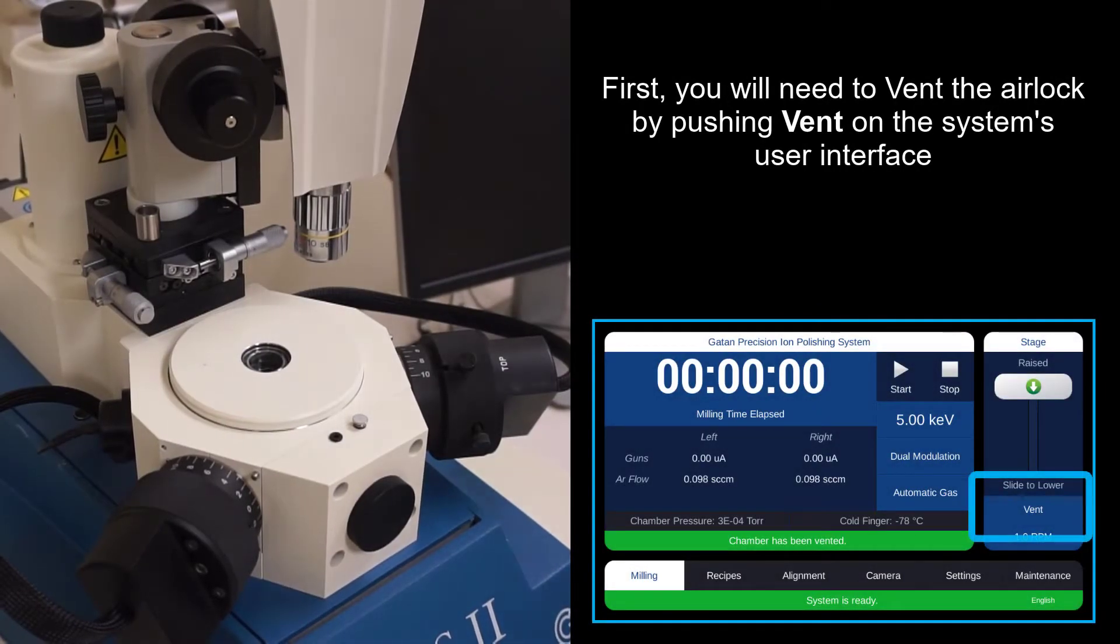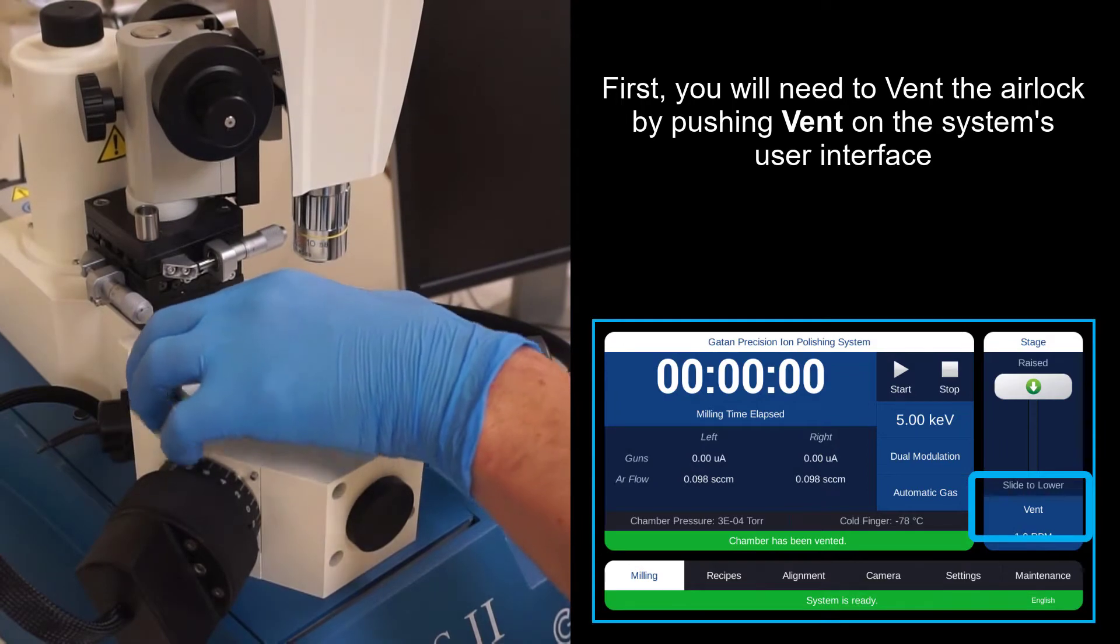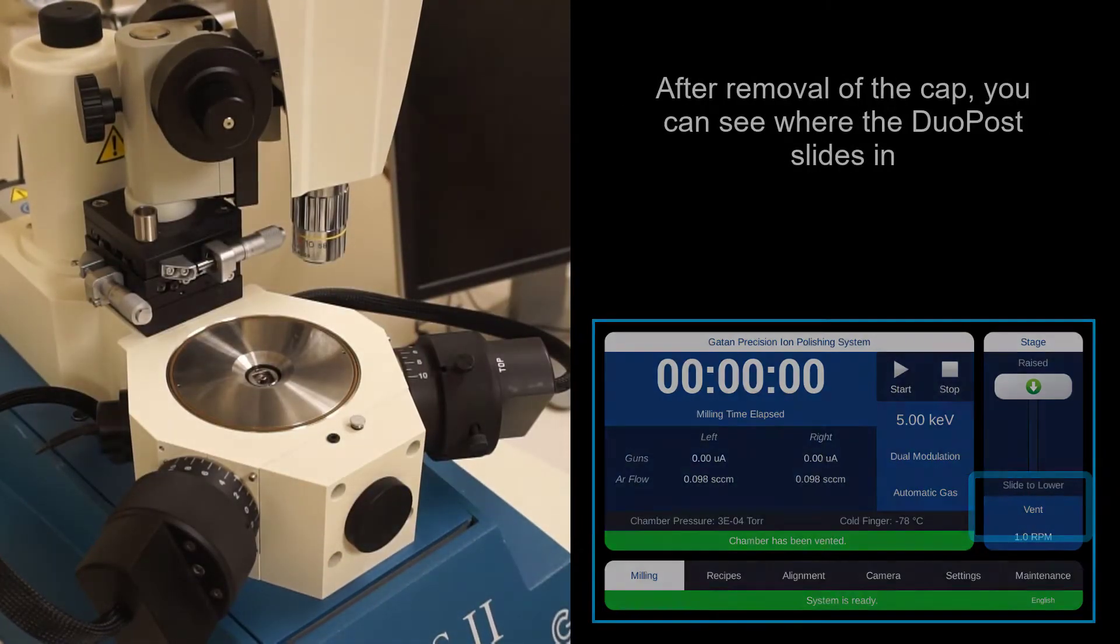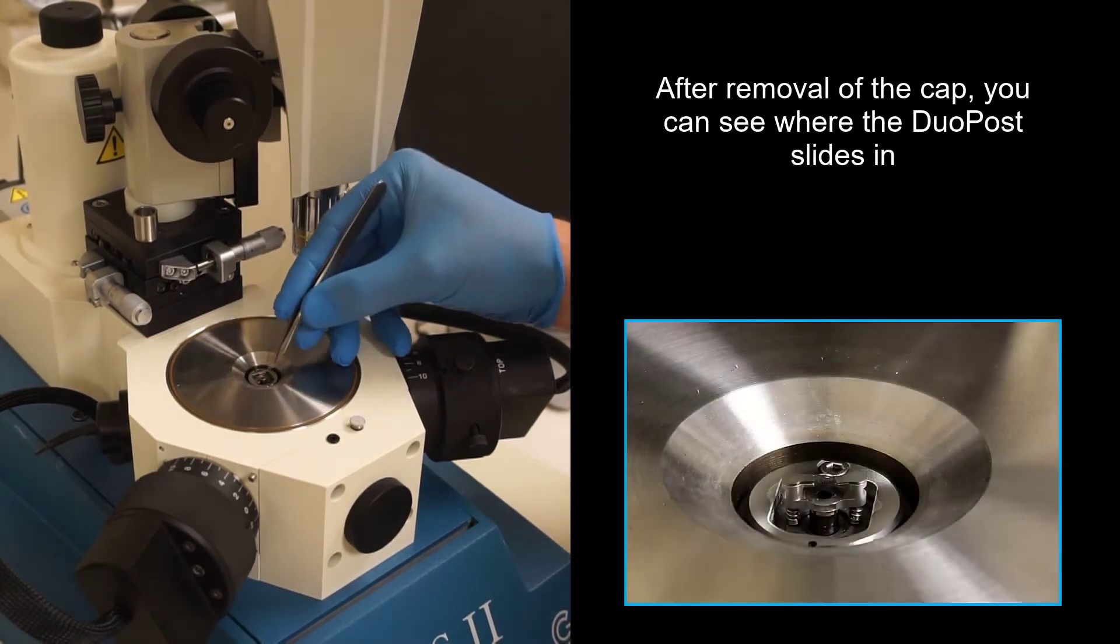Okay, first up you will want to vent the airlock. Press the button on the face and lift this. Now we see where the DuoPost slides into here.